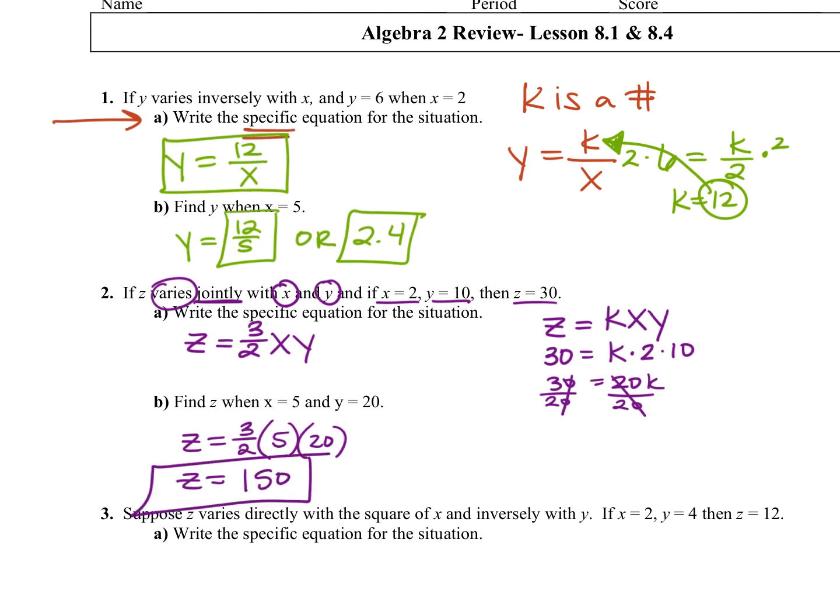Then it says find z when x is 5 and y is 20. So z equals 3 halves times 5 times 20. You can just plug that into your calculator and it will tell you what. It should be 150.